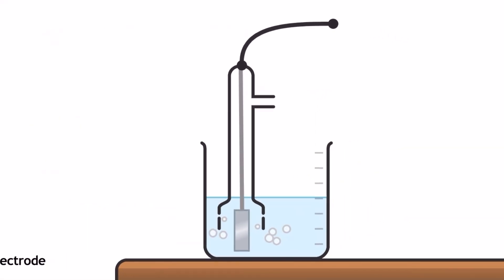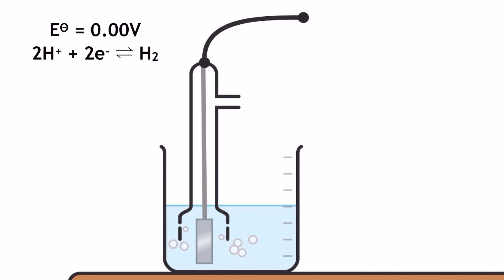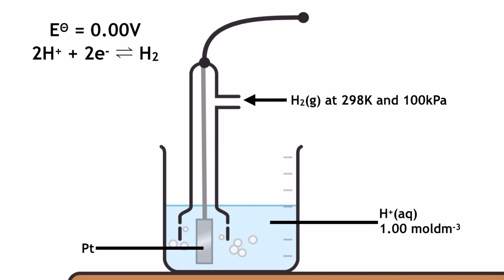Let's take a look at what the standard hydrogen electrode is made of. Our apparatus needs to represent both sides of this equilibrium. To represent the H-plus ions, we're going to use a 1 mol per decimetre cubed solution of hydrochloric acid. The hydrogen gas must be at 100 kilopascals of pressure and 298 Kelvin to maintain standard conditions.